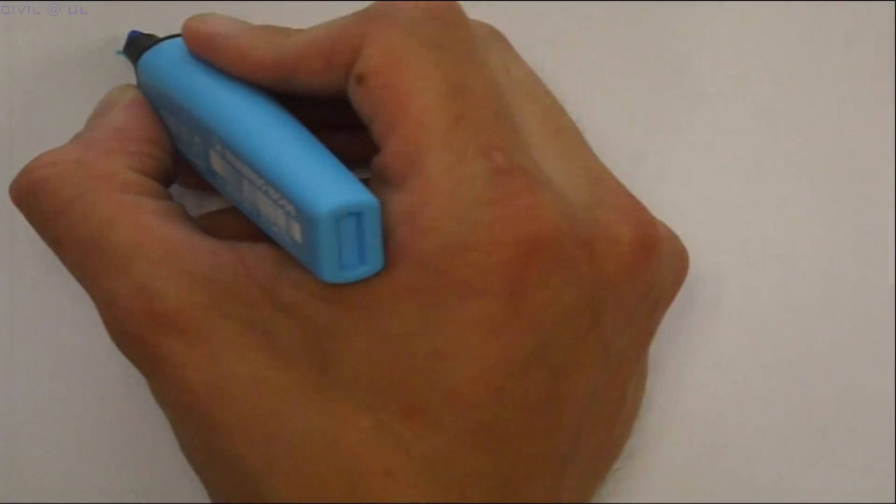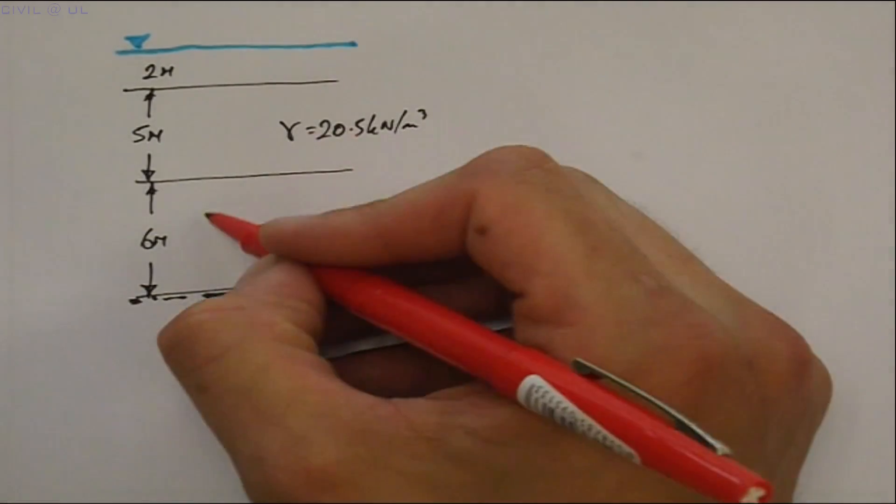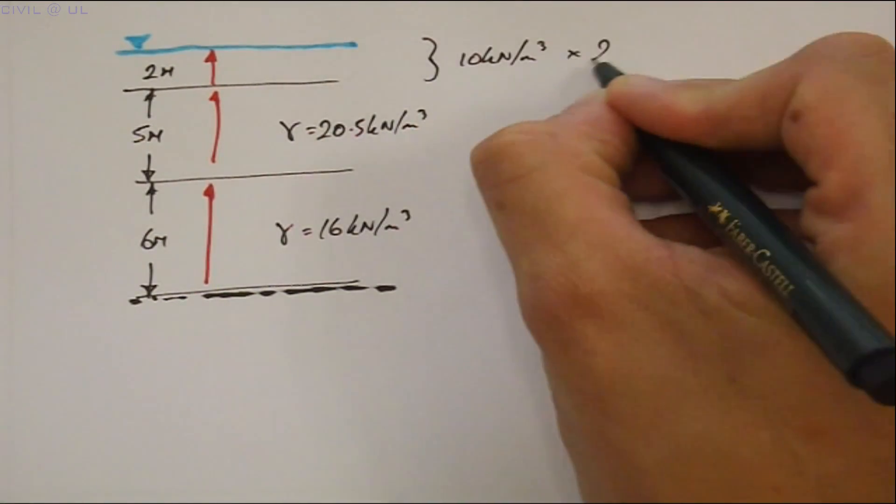Continuing with example 3. Let's say a 2 meter deep river runs over the ground surface and we need the effective stress here. Total stress then is equal to 10 multiplied by 2 meters, the effect of the river.